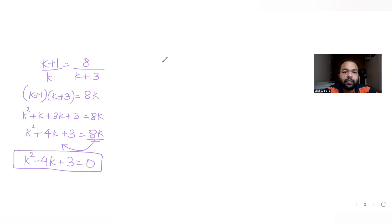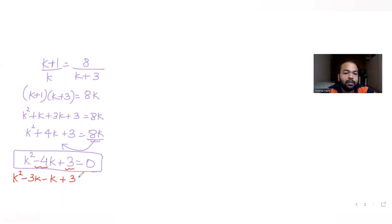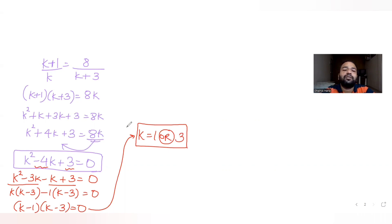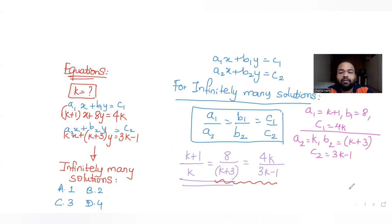Solving this quadratic by splitting the middle term: k² − 3k − k + 3 = 0, giving k(k−3) − 1(k−3) = 0, so (k−1)(k−3) = 0. From this first pair of ratios, k = 1 or k = 3.